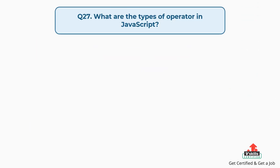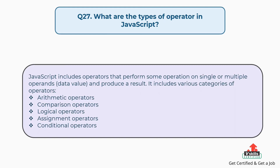Question number twenty-seven: what are the types of operators in JavaScript? JavaScript includes operators that perform some operation on single or multiple operands, a data value, and produce a result. It includes various categories: arithmetic operators, comparison operators, logical operators, assignment operators, and conditional operators.